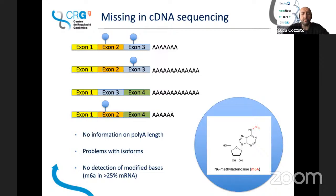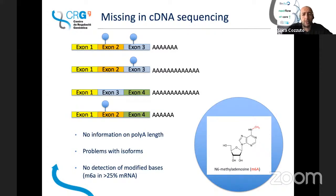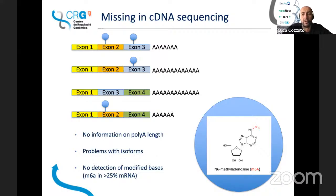Finally, you don't have information about modified bases in DNA or RNA. You can rescue some of them using particular techniques like immunoprecipitation, but for RNA I think there is no Illumina-like technology to get this information. So you have a lot of transcripts that can be modified — they have different kinds of modifications. For instance, just looking at one kind of modification called m6A, more than 25% of mRNAs can have this chemical modification and you miss them.